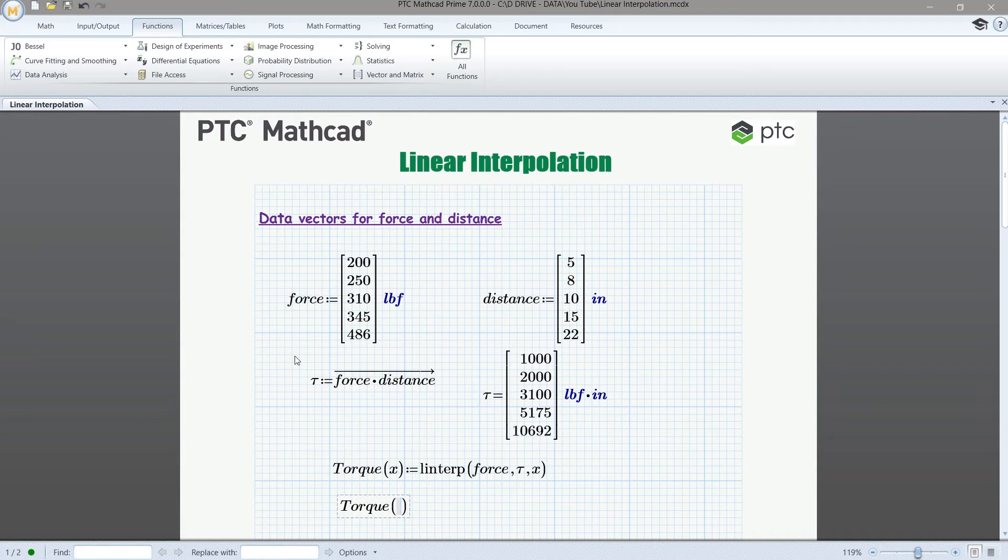So now we can say, let's calculate or let's interpolate torque for a given input of force. And so looking at our force vector, we can just pick a value between these first two elements, entries 200 and 250. So let's just go exactly at the midpoint 225. And we'll use units there, of course. And now if we type equals, we're going to get the interpolated torque value.